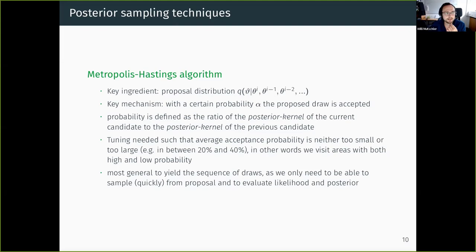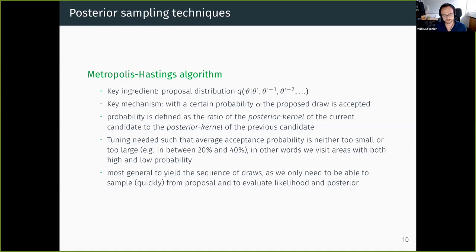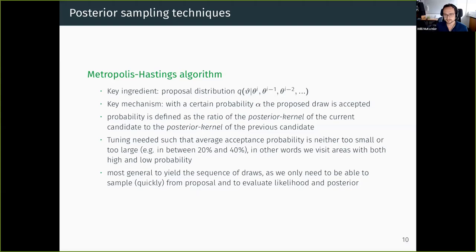A key ingredient in Metropolis-Hastings is the proposal distribution. The requirement is simply that we need to be able to quickly draw from it. We compute a probability of whether to keep or discard a new draw, defined as the ratio of posterior kernels of the new draw versus the current position in the chain. Some fine tuning is needed to ensure we don't get stuck in areas with very high probability but also occasionally visit low probability areas. The most common approach is the random walk Metropolis-Hastings, where we simply re-center the proposal to the previous draw.